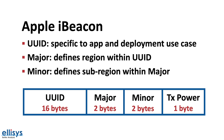The UUID is a specific value assigned to an app or deployment use case. The major number defines the region within that UUID, and the minor number defines a sub-region within the major region. For example, for a specific chain of retail stores, the UUID would be common across all stores. The major would define a store at a specific location — so a store at location A would have a different major than a store at location B — and the minor could define the aisle or the floor within each of these locations.